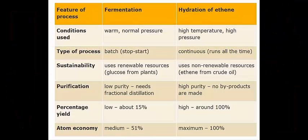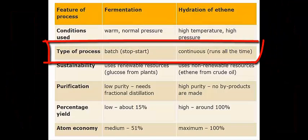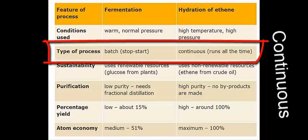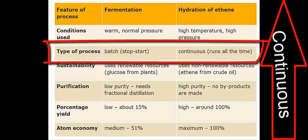Let's compare the type of processes. For the hydration of ethene, it is a continuous process, meaning it can run non-stop. As long as ethene, steam, phosphoric acid catalyst, and the correct temperature and pressure are available, then ethanol can be produced without stopping.